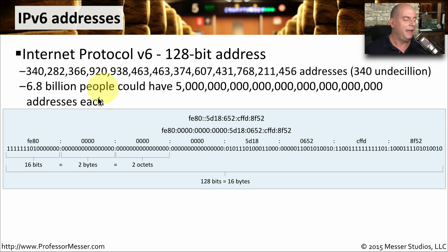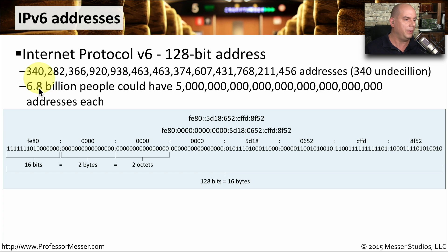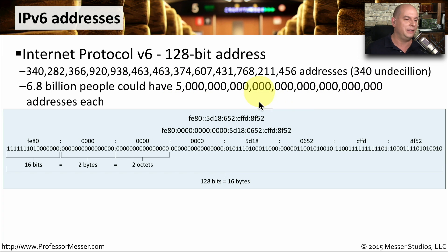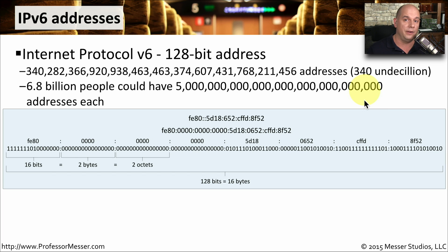That's a lot of addresses. If you look at 6.8 billion people — really over 7 billion people on the earth now — each individual person can have a number of addresses that's a 5 with about 27 zeros on the end of it. That's a lot of addresses for a single person, and it certainly means we're not going to run out of IPv6 addresses.